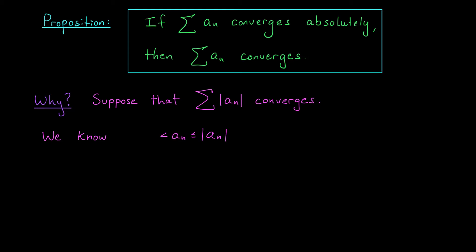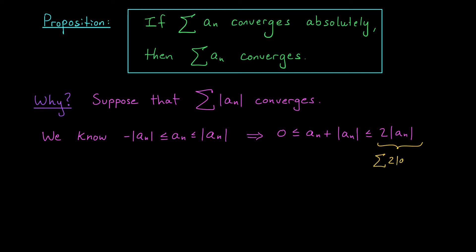We'll first say that a_n is larger than minus the absolute value of a_n. Now when we add the absolute value of a_n to all sides of this inequality, on the left we get zero, which is less than or equal to a_n plus the absolute value of a_n, and that's less than or equal to twice the absolute value of a_n. Everything in sight is now positive. We'll use our assumption that the sum of the absolute values of the a_n's converges. If that series converges, then so does the sum of twice the absolute value of a_n — multiplying by two does not affect convergence. Now we can apply the comparison test: the sum of the larger terms converges, and therefore the sum of the smaller terms must converge as well.